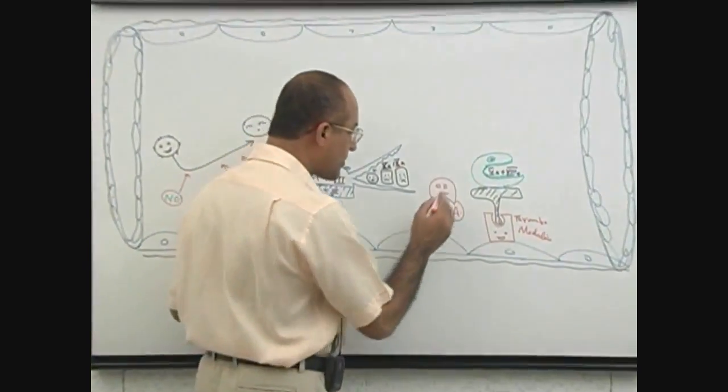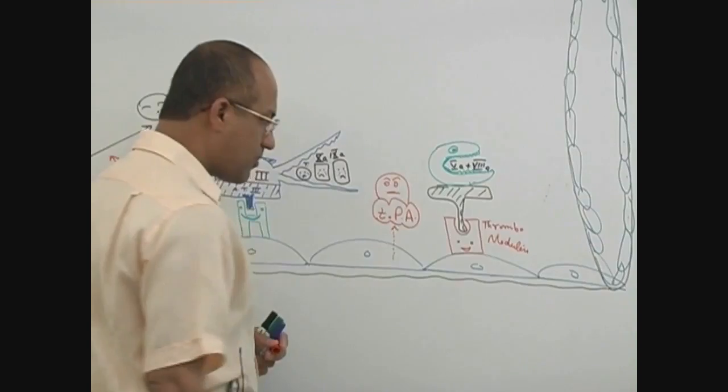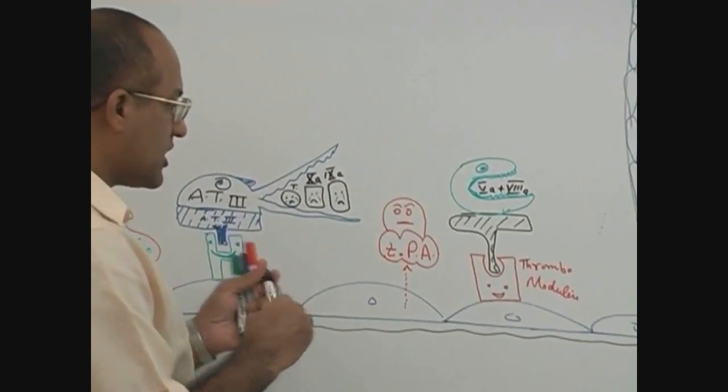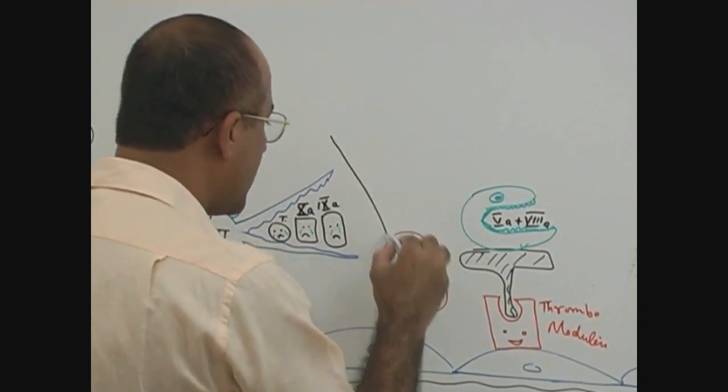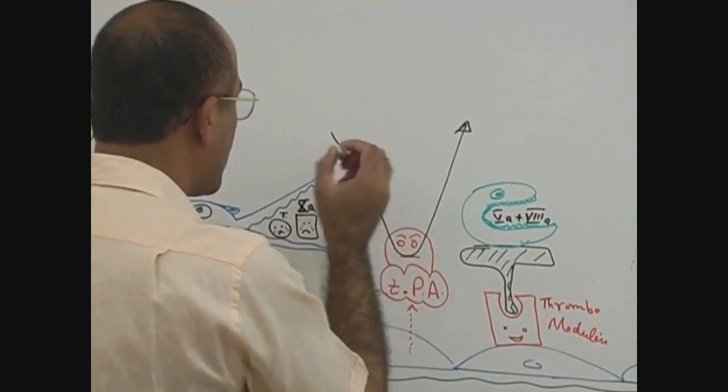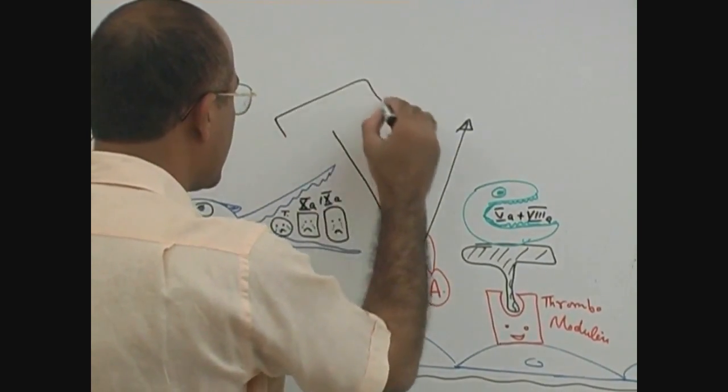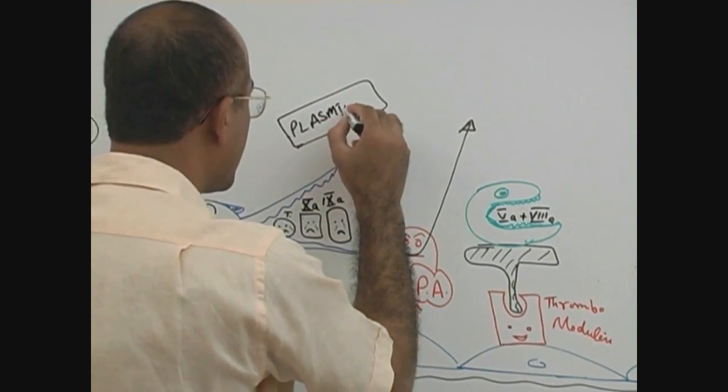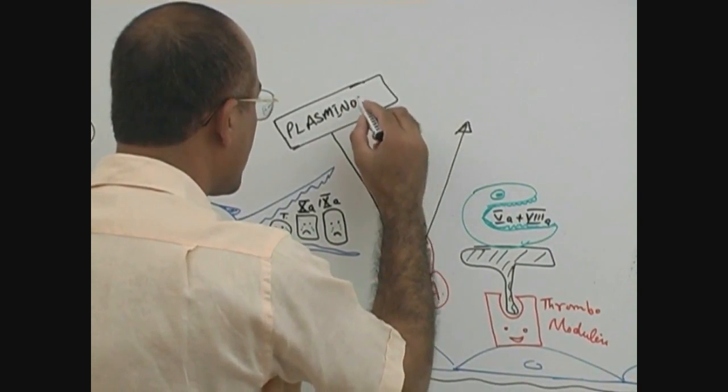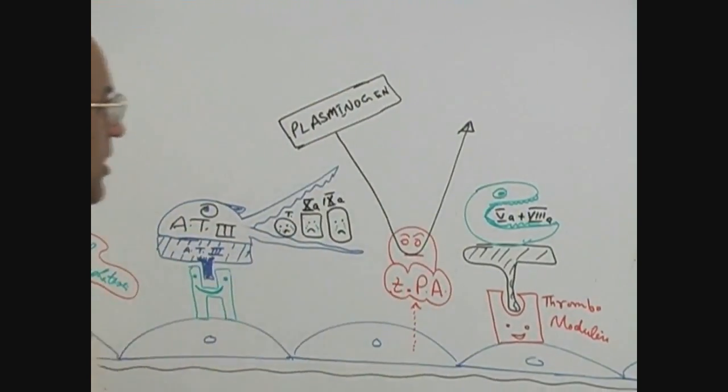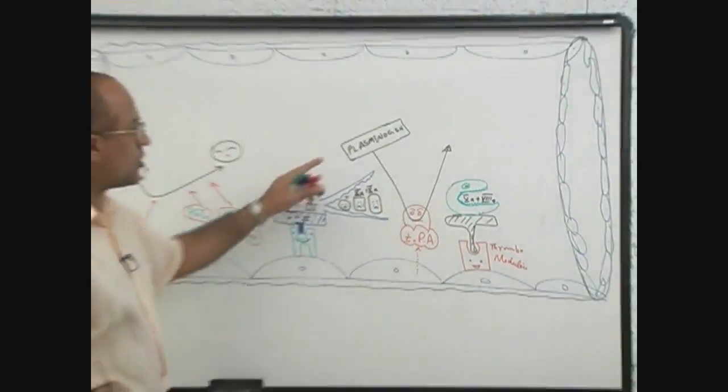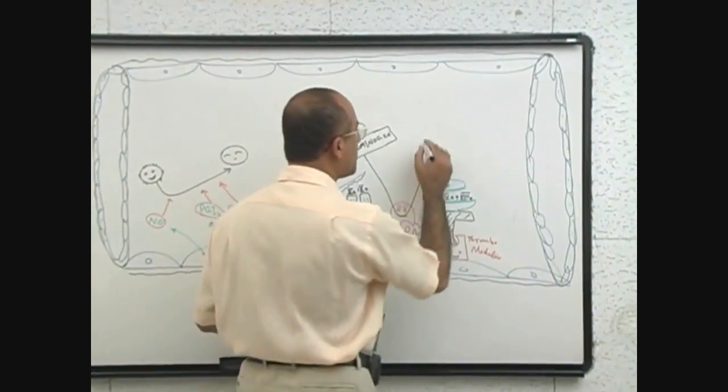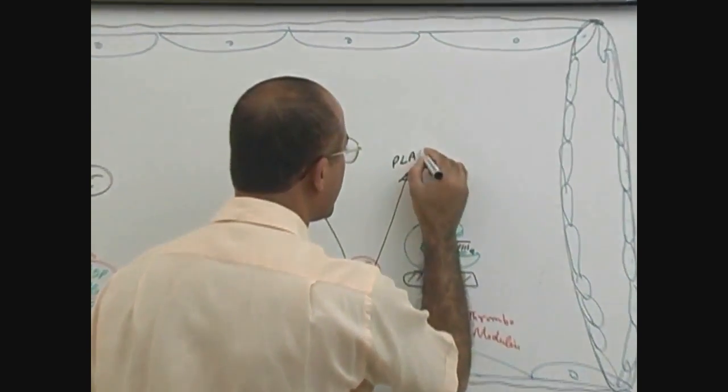What is this product doing? Tissue plasminogen activator can convert another protein coming from the liver, there is a protein called plasminogen. So tissue plasminogen activator activates the plasminogen protein into plasmin.